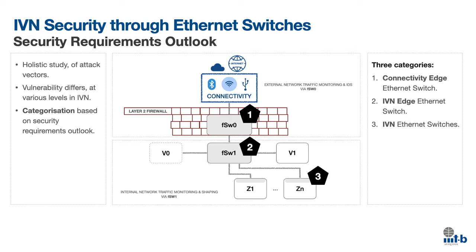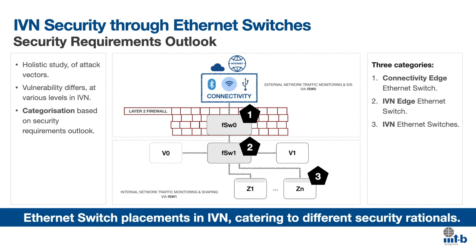This takes us to the section where the security requirements outlook is looked at closely. Based on a holistic study of the attack vectors, it is observed that vulnerabilities differ at various levels in the Ethernet in-vehicle network. This leads to three categories of Ethernet switch security requirements in the IVN. First: connectivity edge, like F-SW0 placements, acting as a firewall switch for external traffic. Second: IVN edge, like F-SW1 placement, acting as a firewall switch for internal traffic. Third: IVN others, like SW0 or SW1 with ZC, depicted in gray areas within Z1 to ZN. So the Ethernet switch placements in IVN cater to different security rationals.